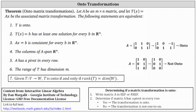Let's relate past knowledge to onto transformations. If we let A be an m×n matrix and let T(x) = Ax be the associated matrix transformation, then the following statements are equivalent: T is onto; T(x) = b has at least one solution for every b in R^m; Ax = b is consistent for every b in R^m; the columns of A span R^m; A has a pivot in every row; the range of T has dimension m. Also, if T maps V to W, T is onto if and only if the rank of T equals the dimension of W.